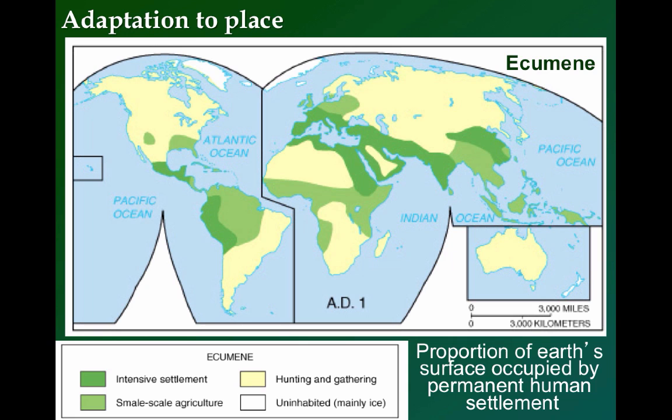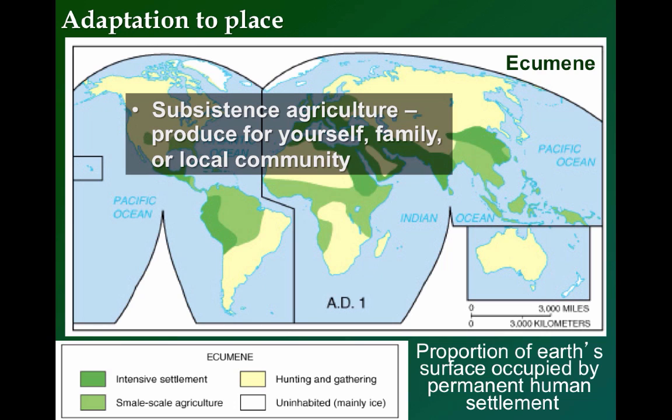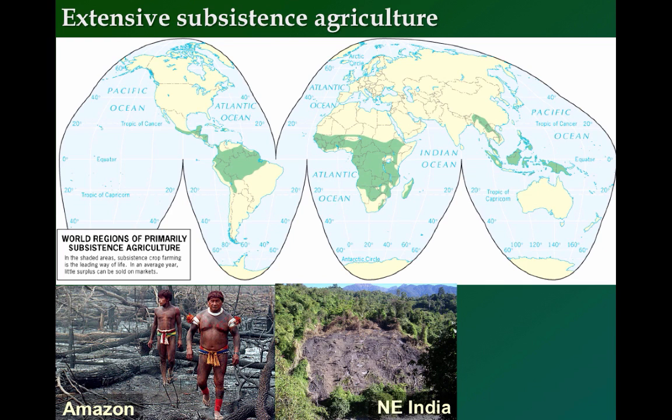Most agriculturalists were subsistence farmers, meaning they produce food for themselves, their families, or their local communities and markets. We'll look at two different types of extensive subsistence agriculture, in which relatively large areas are farmed but with relatively low inputs of labor. These lifestyles exist to this very day.